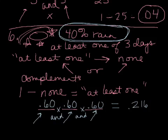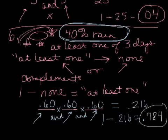Now you want the complement of that to get the probability of at least one. So one minus 0.216 is 0.784. That's your final answer there.